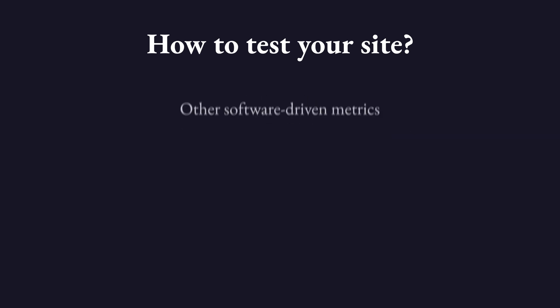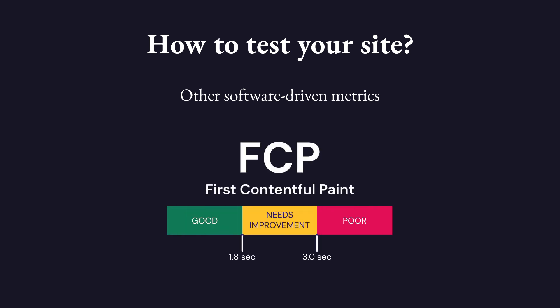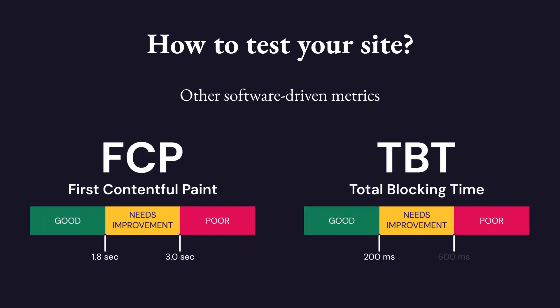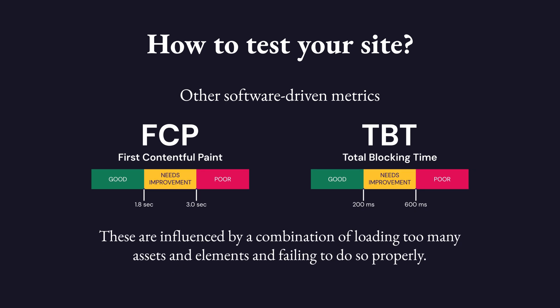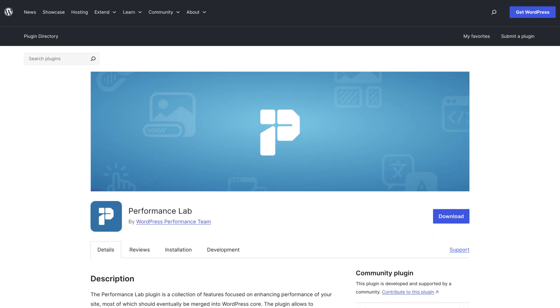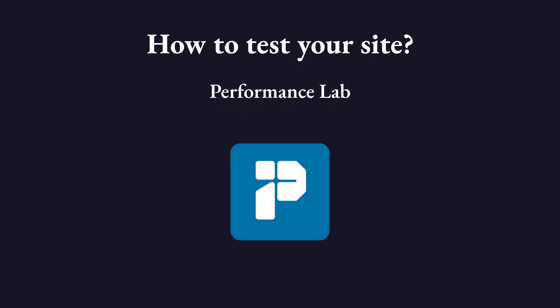When testing, you'll encounter other software-driven metrics, including First Contentful Paint, or FCP — when the browser displays the first bit of content — and Total Blocking Time, or TBT, the time elapsed after FCP and before visitors can interact with the site. These are influenced by a combination of loading too many assets and failing to do so properly. Performance Lab is a community plugin developed by the WordPress performance team that may mitigate some of these problems. This plugin combines six standalone plugins, each designated to tackle a specific performance feature using the latest browser technology. Once activated, the plugin automatically begins optimizing your site — there is no need for manual configuration or adjustments.